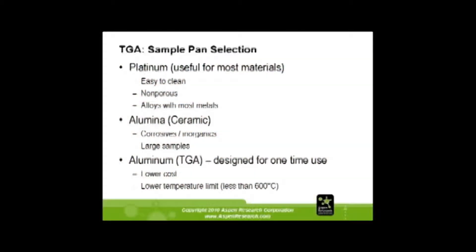Platinum is the pan I use most — it is very easy to clean. The only thing is it does alloy with most metals. So if you use a tin-lead solder and want to measure the melting point, you'll glue the platinum pan because it ain't coming off. For metals, I would probably use the ceramics — at least you can get the sample out. Ceramics are great for corrosive, inorganic, and high-temperature samples. They do make TGA pans in aluminum, but they are only good up to 600 degrees before the pan will melt. Aluminum pans are usually one-time use but reasonably priced.